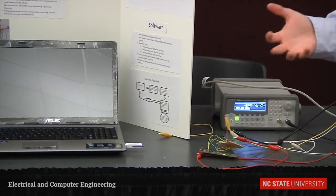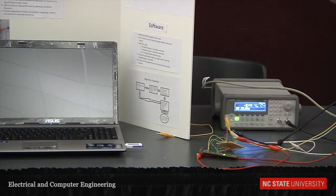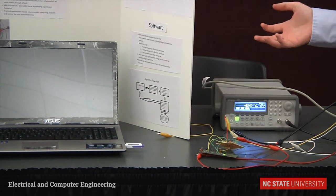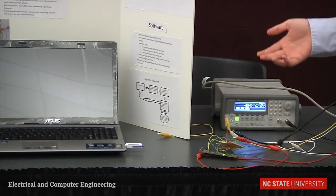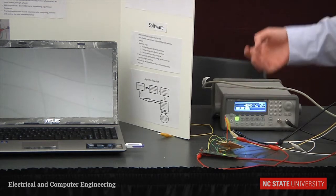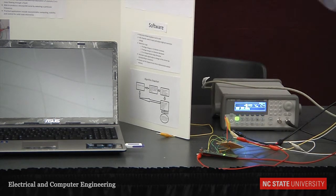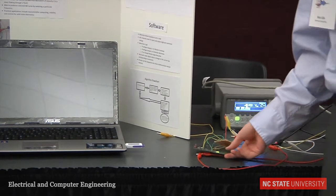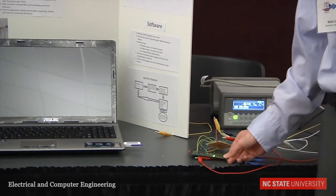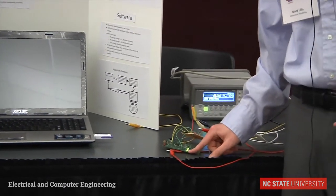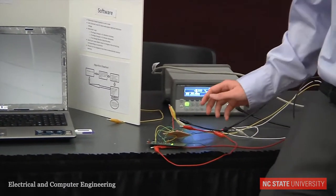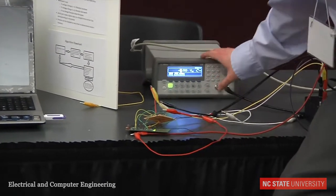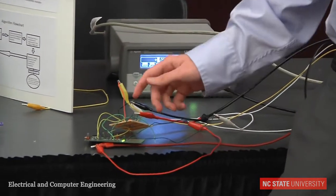Basically, what we have is a microcontroller that will calculate the correct resistance. After you push the button and turn it off, it will remember that resistance the next time you turn it on. On the actual microcontroller here — I don't know if you can see it — there are just a couple of lights. When I push the button, it will change.